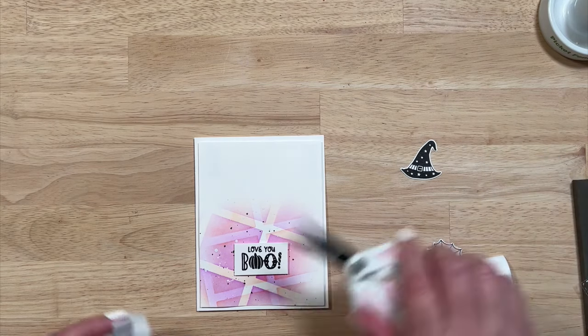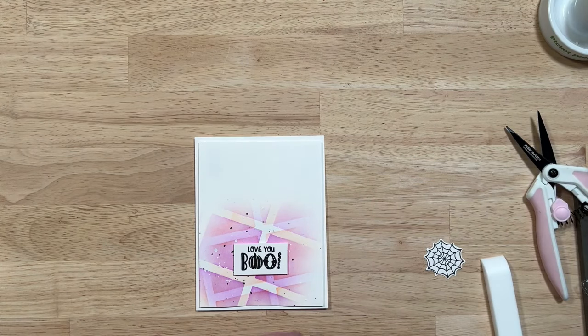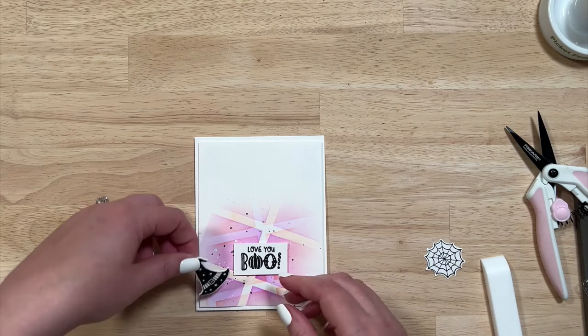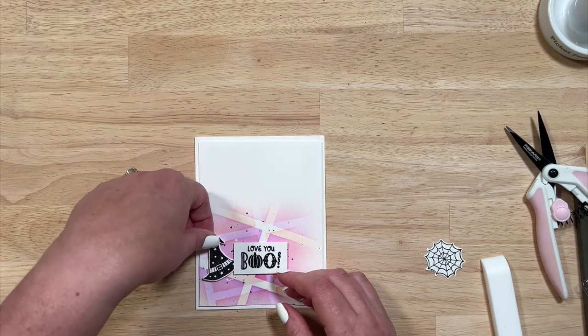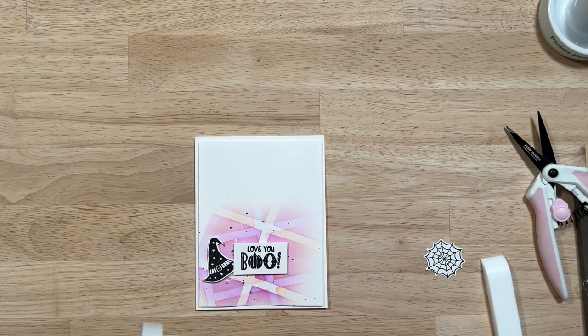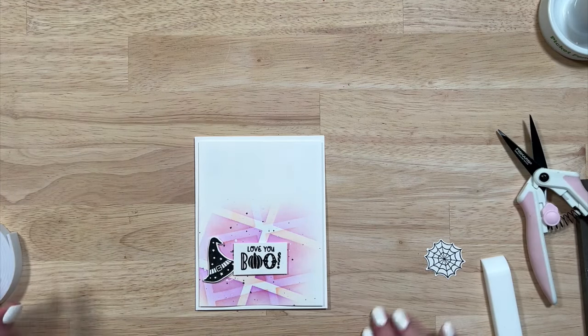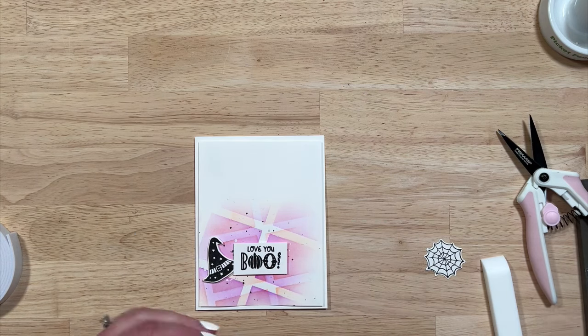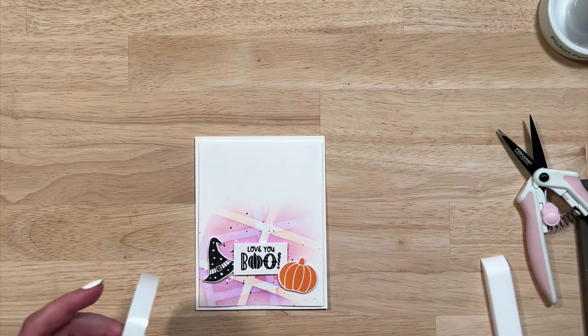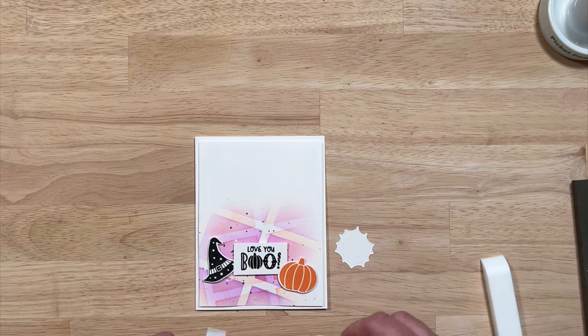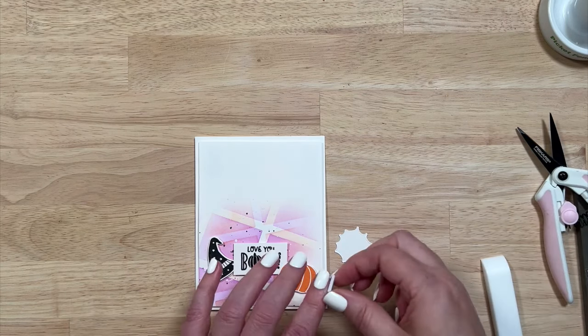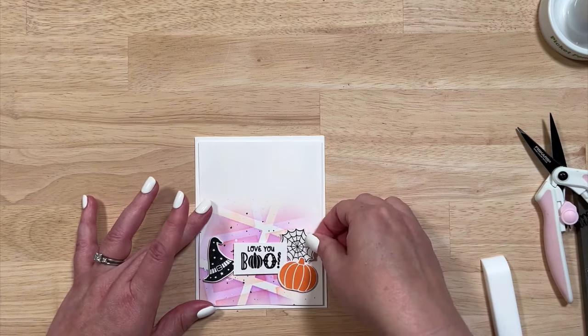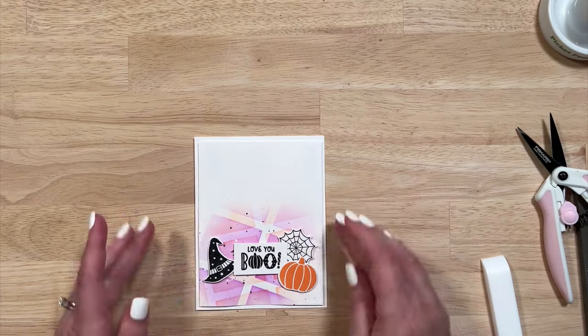So I'm going to start with my sentiment. Next up, I'm going to add my witch's hat. I'm going to kind of tuck that underneath there. Then my pumpkin, I'm going to go over and with my spider web, I'm going to go under.